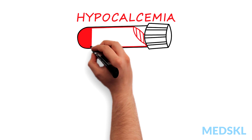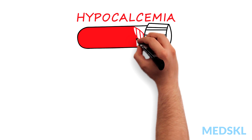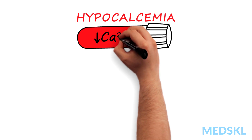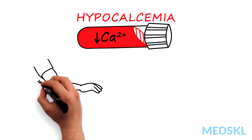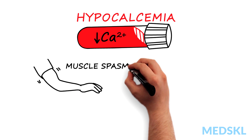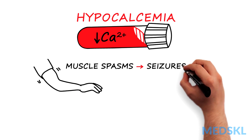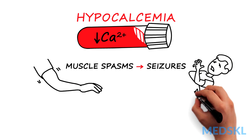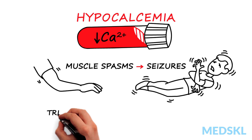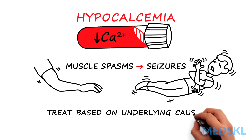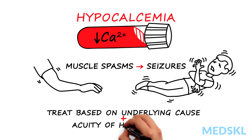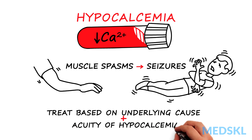Hypocalcemia is a condition where the calcium level in your blood is below normal. Clinical presentations for hypocalcemia may range from muscle spasms to seizures. The treatment depends on the underlying cause as well as the acuity of the hypocalcemia.